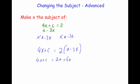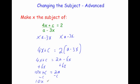We want to make x the subject, so get all the x's to one side and everything else to the other. The lowest number of x's is minus 6x, so let's add 6x to both sides. Adding 6x gives 10x plus c on the left, and 2a on the right. Now get rid of the plus c by taking away c from both sides, leaving 10x equals 2a minus c.